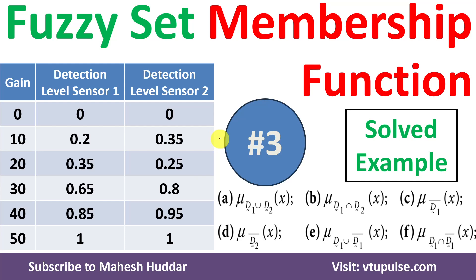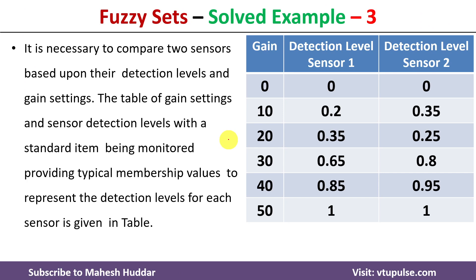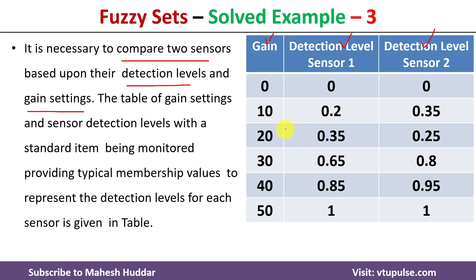Welcome back. In this video I will discuss how to find the membership function given fuzzy sets, with the help of a simple solved example. This is solved example number three; links for other examples are given in the description below. In this case we need to compare two sensors based on their detection level and gain settings. We need to convert this data into a fuzzy set and then perform operations such as union, intersection, complement, and difference.